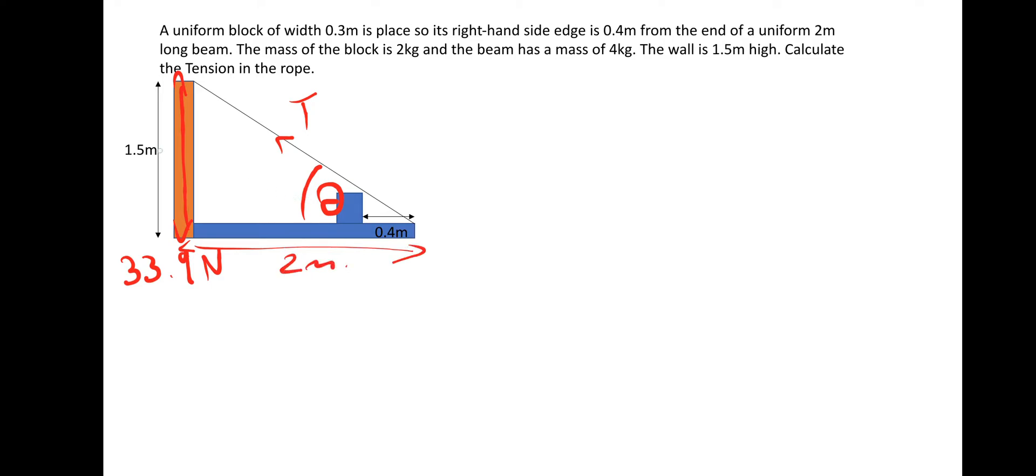Because we know the height is 1.5 meters. And we know the length is 2 meters. So we've got the opposite. And the adjacent. So tan theta is equal to 1.5 over 2. So theta is inverse tan 1.5 over 2. Which is 37 degrees.